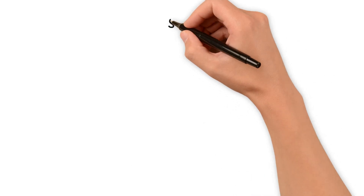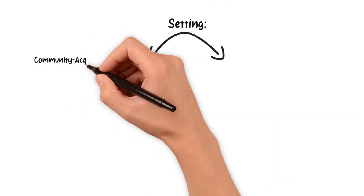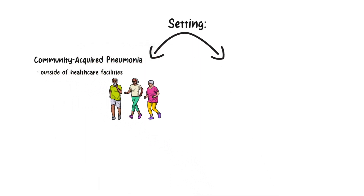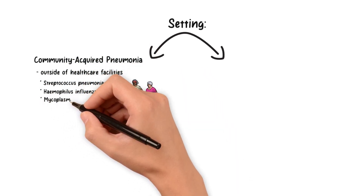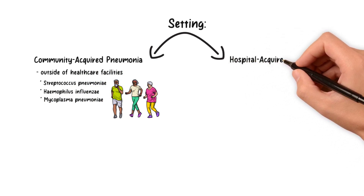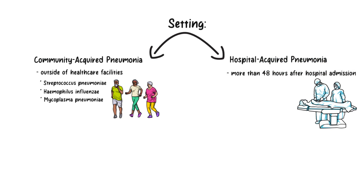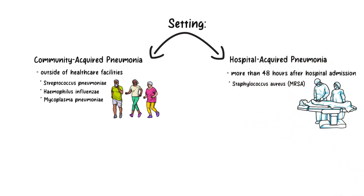Pneumonia can also be classified based on the setting in which it is acquired. Community-acquired pneumonia occurs outside of healthcare facilities and is typically caused by common bacterial pathogens like Streptococcus pneumoniae, Haemophilus influenzae, and atypical organisms like Mycoplasma pneumoniae. Hospital-acquired pneumonia occurs more than 48 hours after hospital admission and is usually associated with multi-drug-resistant organisms, such as methicillin-resistant Staphylococcus aureus (MRSA).